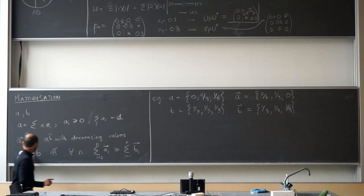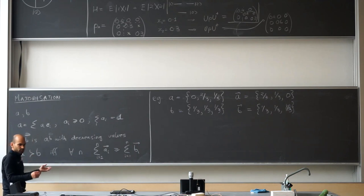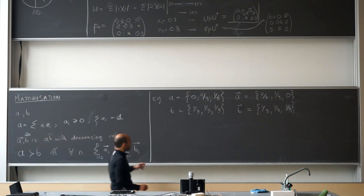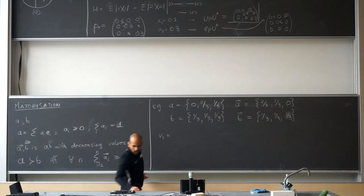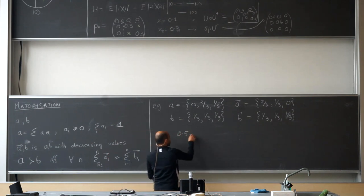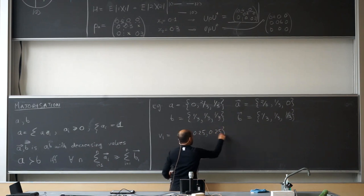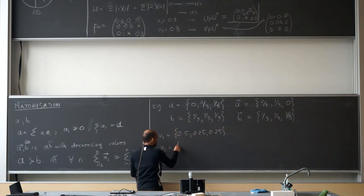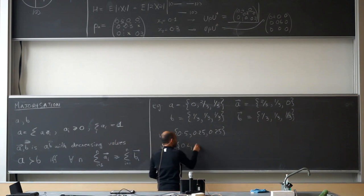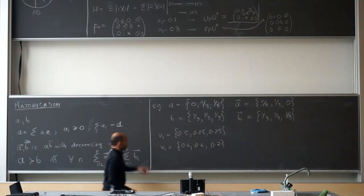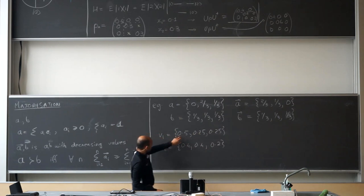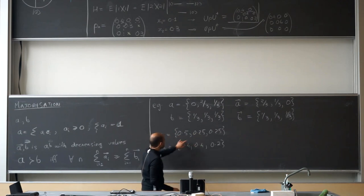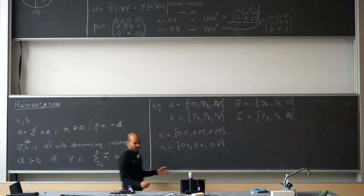Majorization is clearly an ordering relation, but it is not a total order — it's only a partial order, because there are cases where vectors are not comparable. For example, v1 = (0.5, 0.25, 0.25) and v2 = (0.4, 0.4, 0.2). Looking at just the first element, 0.5 > 0.4; but looking at the first two elements, 0.75 < 0.8. So neither majorizes the other — they are incomparable.